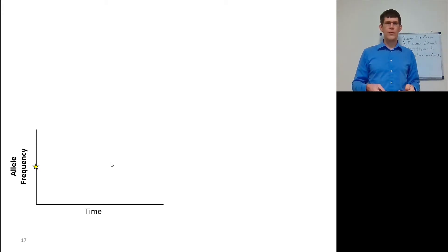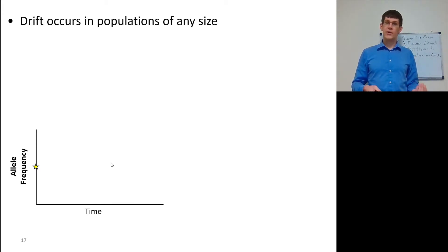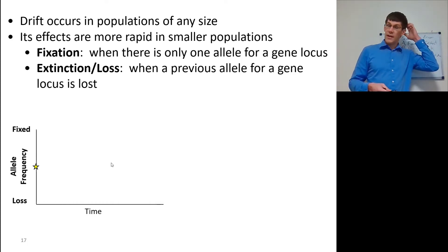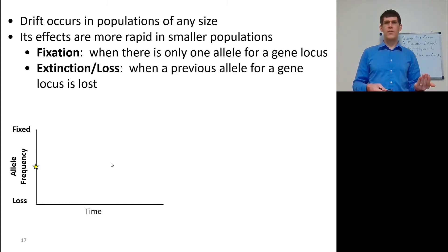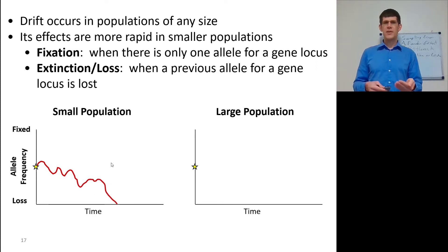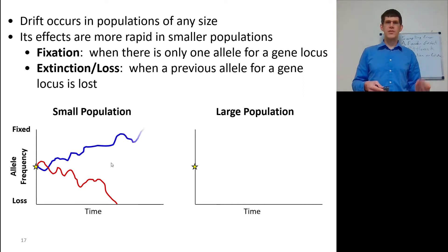You have allele frequency over time. Drift occurs in any population, but in larger populations it occurs more slowly. Fixation is when only one allele remains for a locus; extinction is when a previous allele for a locus is lost. In small populations, small samples result in allele frequency going to fixation or extinction relatively quickly, while in large populations it tends to remain somewhere in the middle.